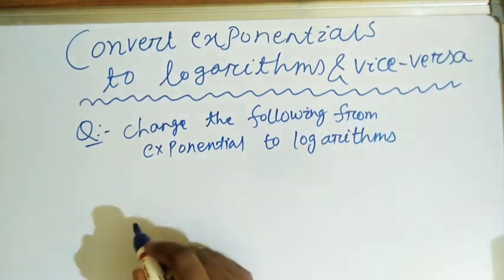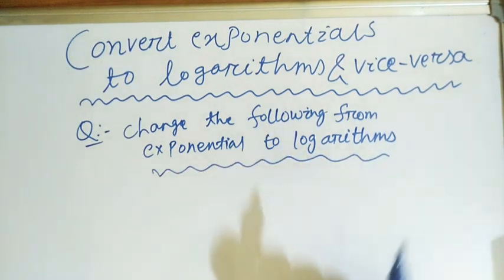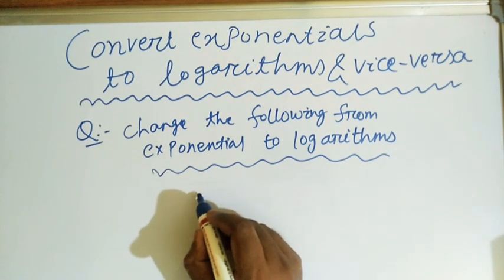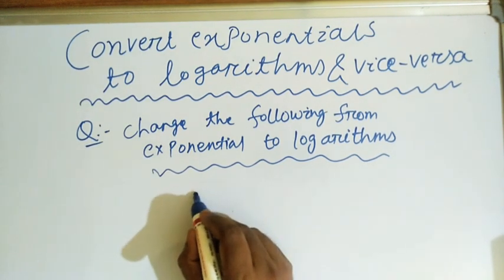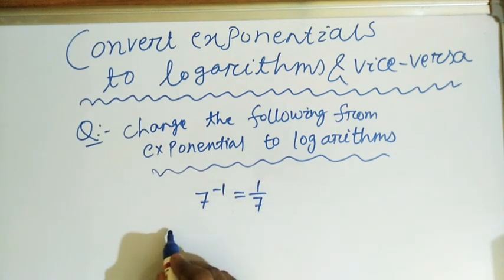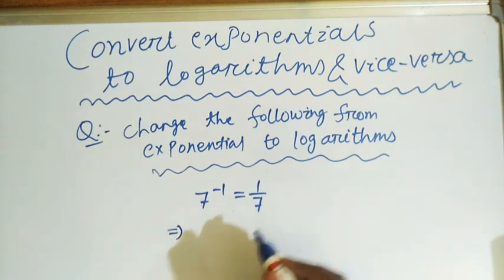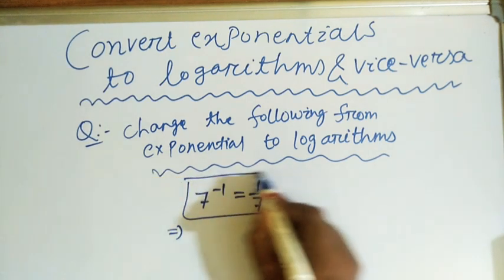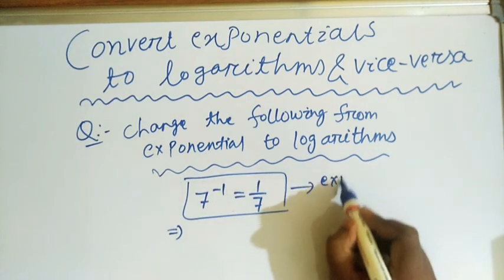The question is: change the following from exponential to logarithms. Some exponentials are given here. We have to convert them into logarithms. The first question is 7 to the power minus 1 is equals to 1 by 7.